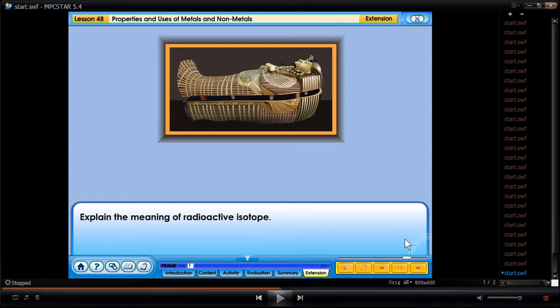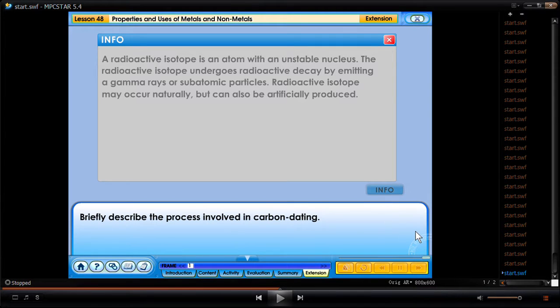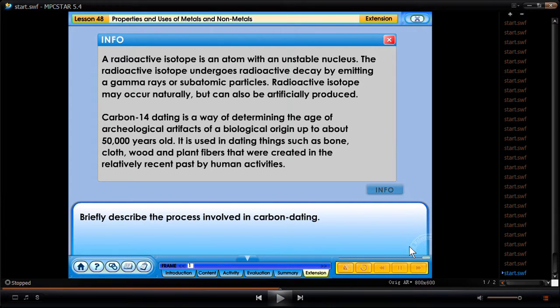Explain the meaning of radioactive isotope. Briefly describe the process involved in carbon dating. A radioactive isotope is an atom with an unstable nucleus. The radioactive isotope undergoes radioactive decay by emitting a gamma ray or subatomic particle. Radioactive isotopes may occur naturally but can also be artificially produced. Carbon-14 dating is a way of determining the age of archaeological artifacts of a biological origin up to about 50,000 years old. It is used in dating things such as bone, cloth, wood, and plant fibers that were created in the relatively recent past by human activities.